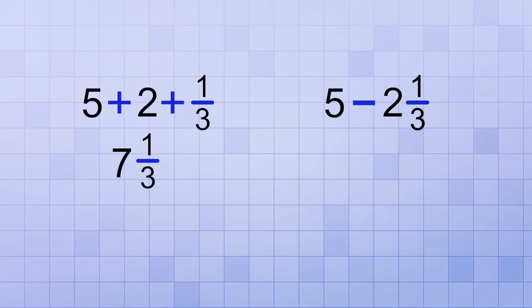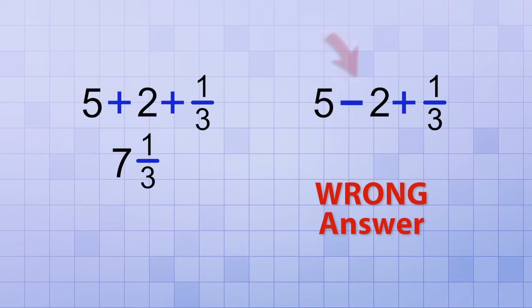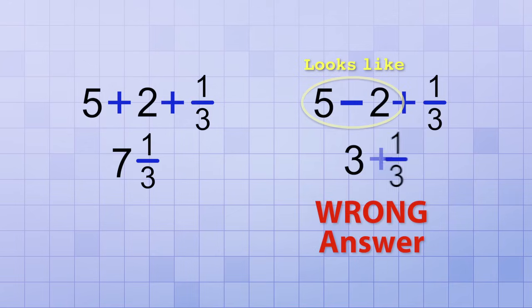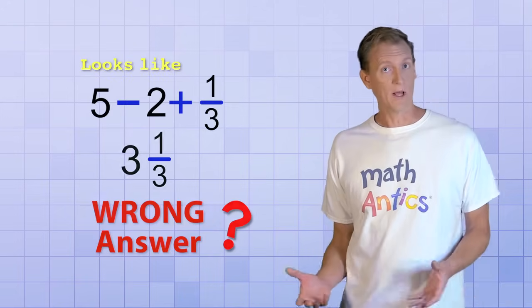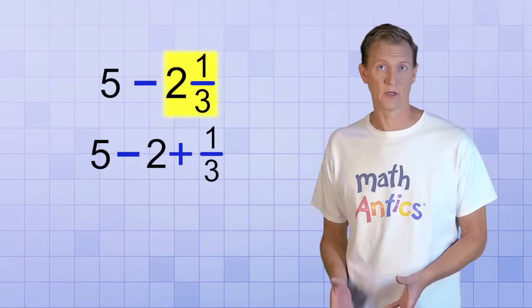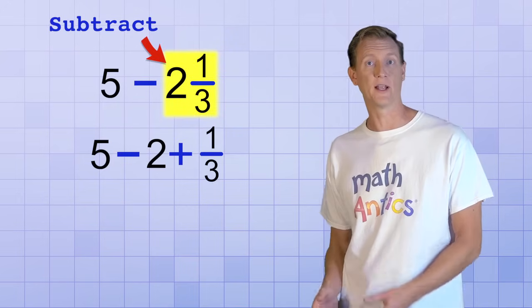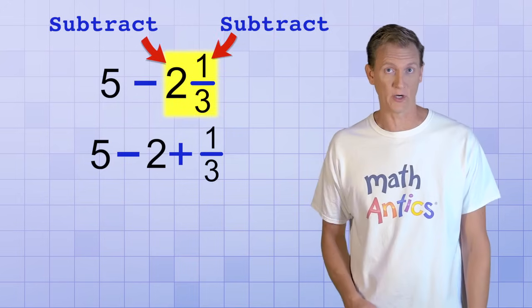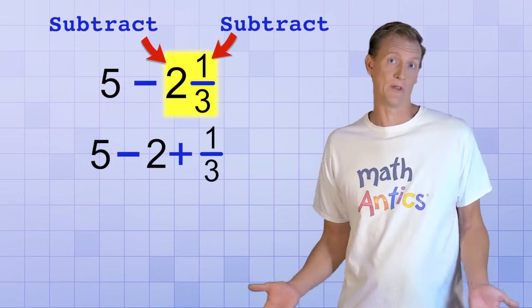But if we try to do the same thing with subtraction, we're going to get the wrong answer. If we rewrite 2 and 1 third as 2 plus 1 third, it looks like we could just subtract the whole numbers. 5 minus 2 is 3, which leaves 3 plus 1 third, or 3 and 1 third, as the answer. But it turns out that's not correct. Oops! So what did we do wrong? Well, when we subtract a mixed number, we need to subtract the entire mixed number. We need to subtract the whole number part and we need to subtract the fraction part. But we didn't subtract the 1 third. We added it.